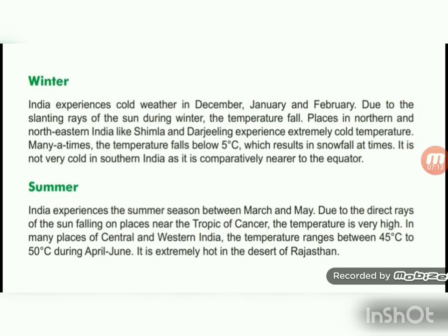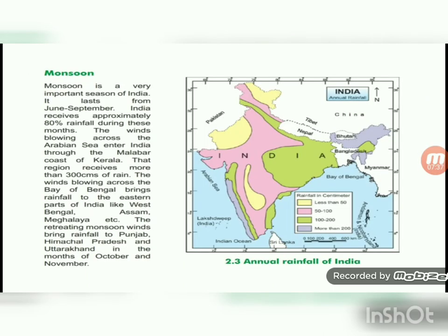Monsoon is a very important season in India. It lasts from June to September. India receives approximately 80% of its rainfall during these months. The winds blowing across the Arabian Sea enter India through the Malabar coast of Kerala; that region receives more than 300 cm of rain. The wind blowing across the Bay of Bengal brings rainfall to the eastern part of India — West Bengal, Assam, Meghalaya, etc. The retreating monsoon winds bring rainfall to Punjab, Himachal Pradesh, and Uttarakhand in the months of October and November.